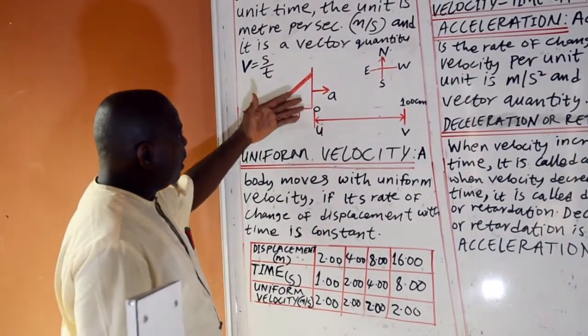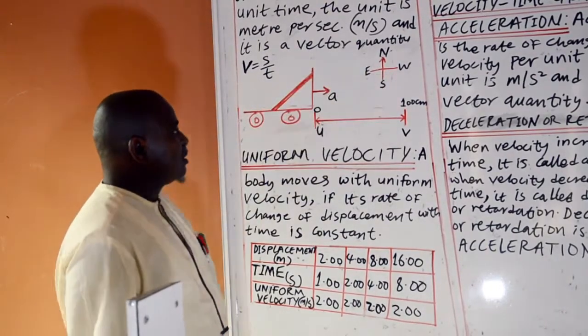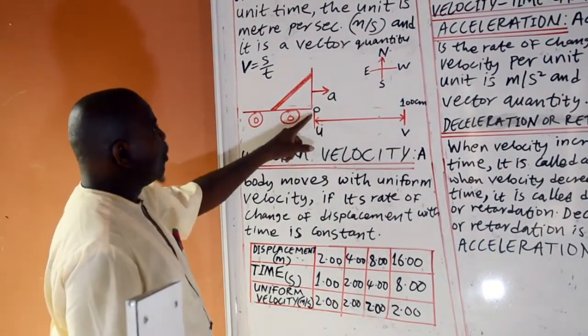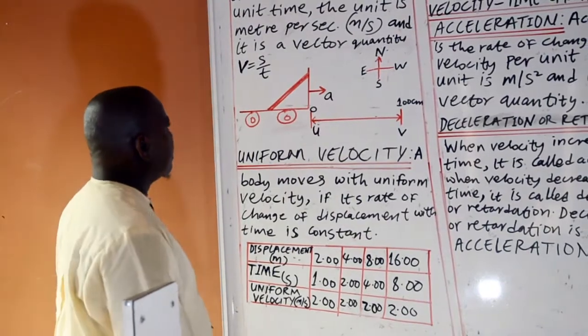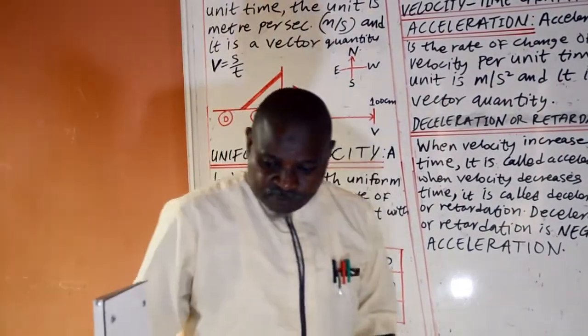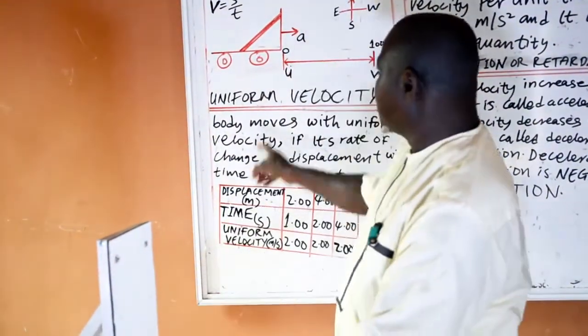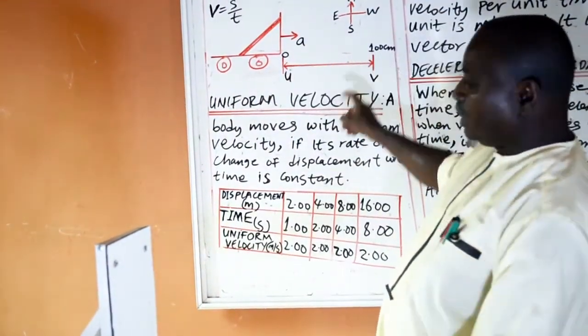This curve, you move from east to west, a distance of 100 cm. Initially, when it starts at zero, this is the zero point. This is 100 cm.